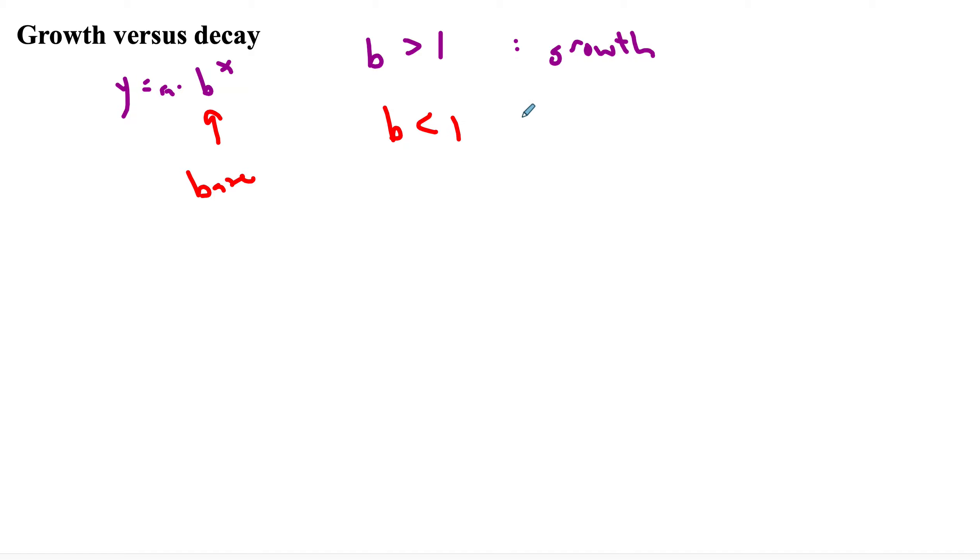If it's less than 1, it's decay. Now, in general, and this is probably a good time to point this out, the base is always going to be greater than 0. It's also not going to be equal to 1. There's a couple reasons for that.